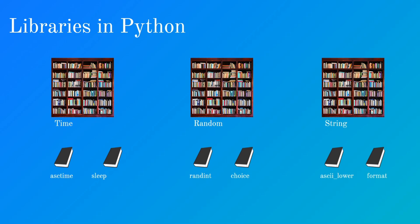For example, the time library has two functions we'll look at: asctime, which gives you the formatted version of the date — the day of the week, the time, and all that data — and sleep, which will basically pause your program from running. The random module is probably the most helpful of the three, because generating random numbers is something you'll do a lot when programming, especially when making games. There's also the choice function, which is very helpful, particularly in games.